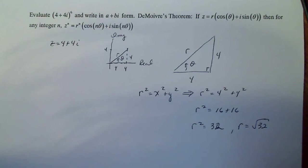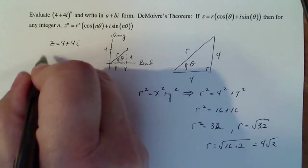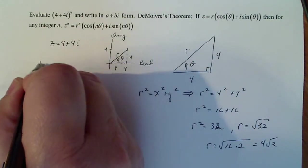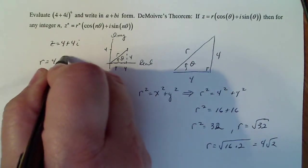So r is equal to square root of 32. Now don't leave it like that, that can be simplified. You can write r as the square root of 16 times 2 and the square root of 16 is 4 square root of 2. So r is, for this complex number, r is 4 square root of 2.